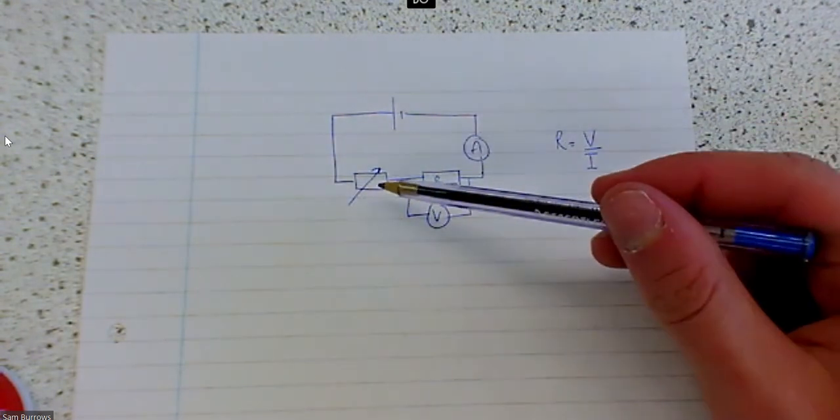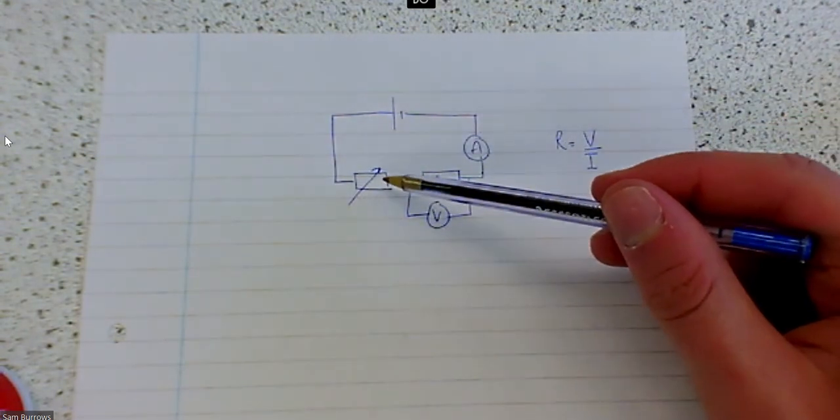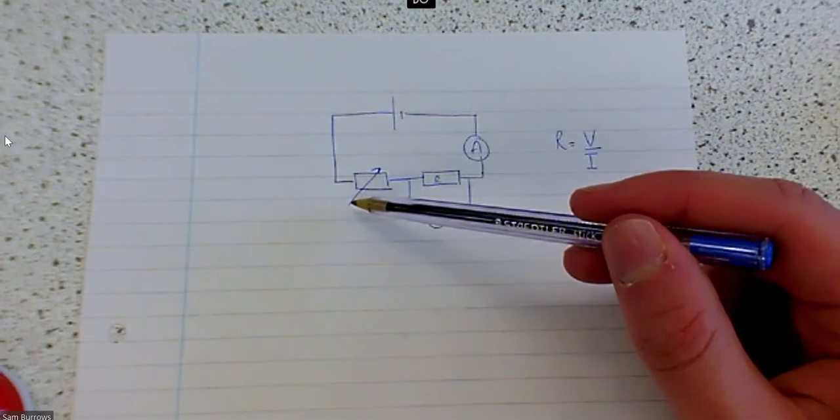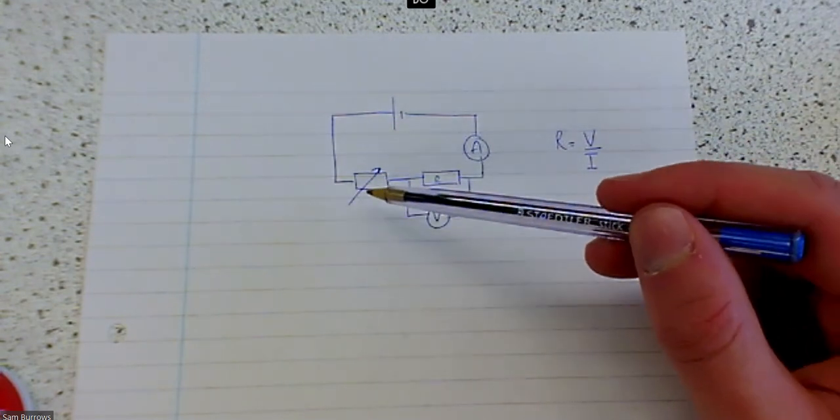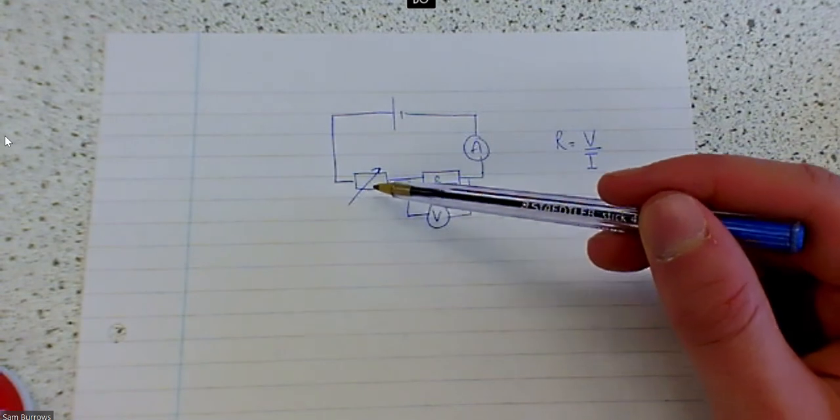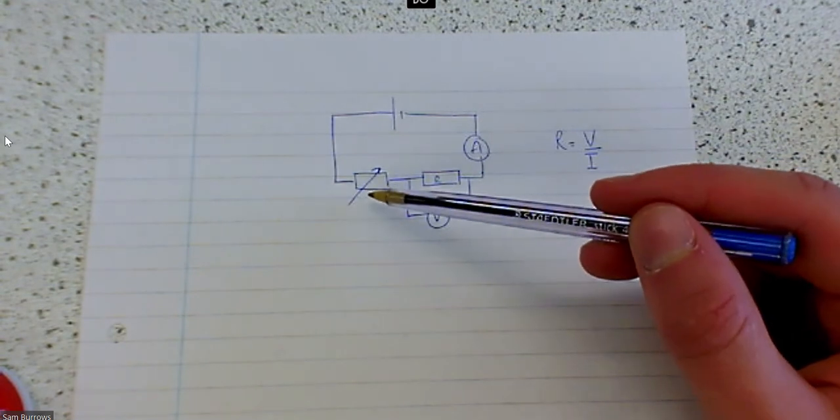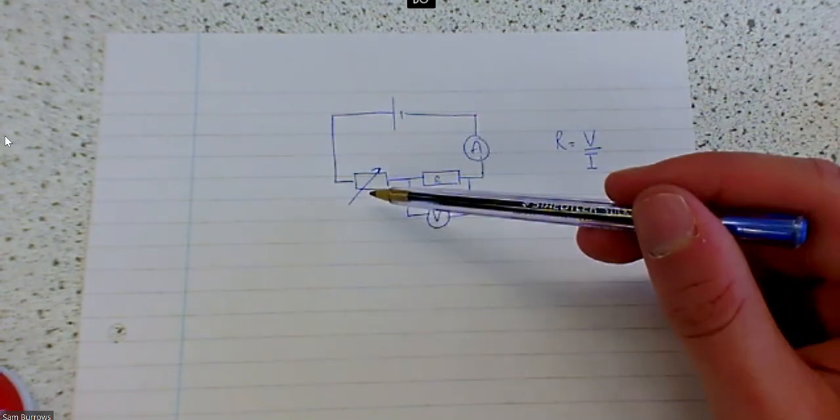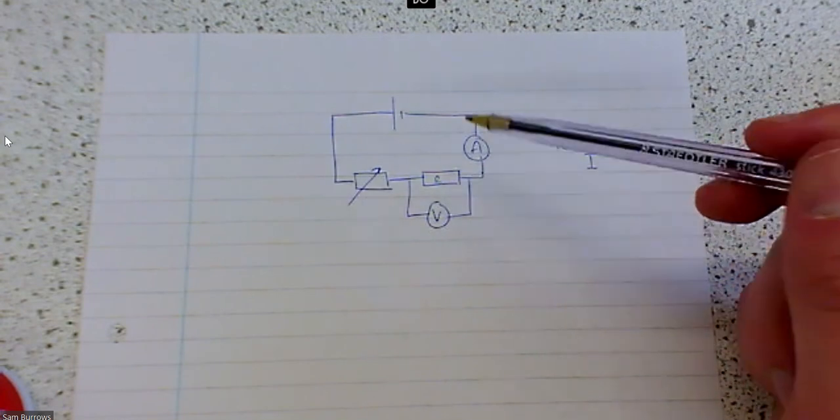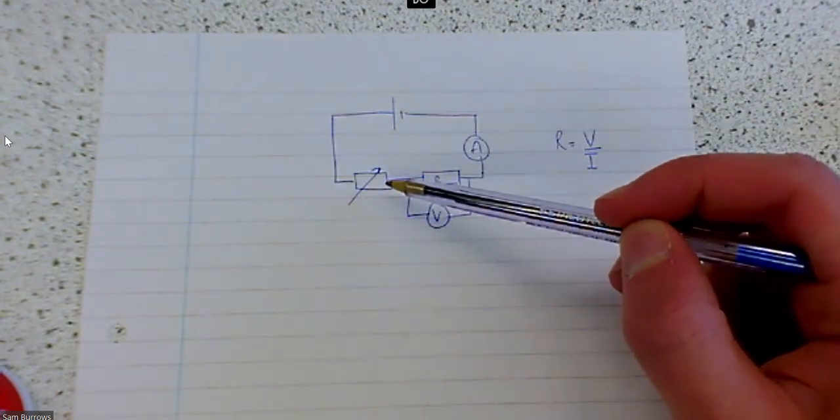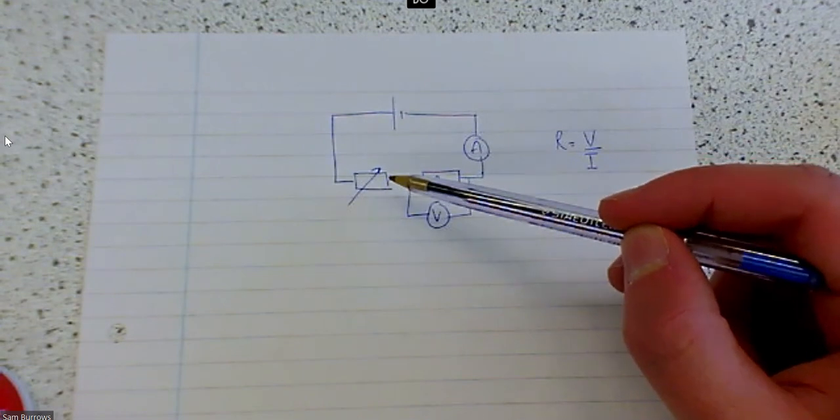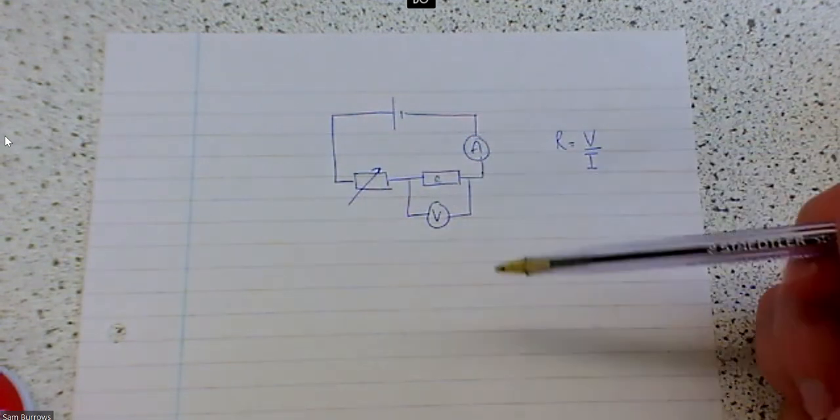So you might be wondering why there's a variable resistor in here. The reason I've got this is it's going to allow me to change the size of the current in our circuit because I want to stop the current getting too high because if the current gets high the circuit can get very hot and then that can change the resistance of this component. So this is here to essentially control the temperature in the circuit and make sure it doesn't change. So temperature is one of our control variables in this experiment.